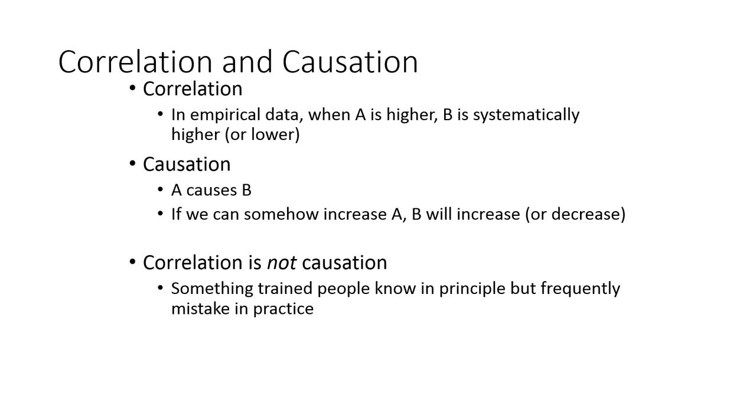So causation then is just the step beyond correlation. Causation says that variable A actually causes variable B. And what this means is that if we can somehow increase A, we will see then an increase in B or perhaps a decrease if the relationship is negative.